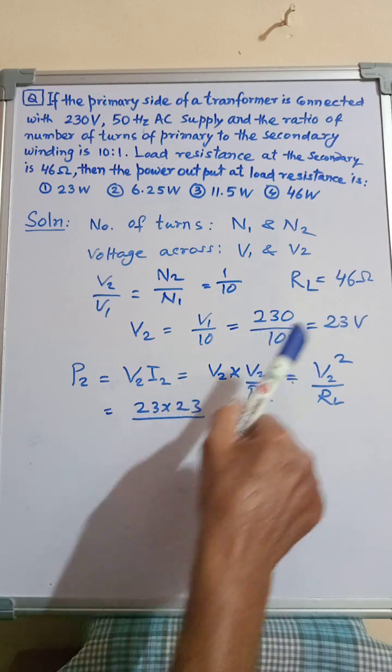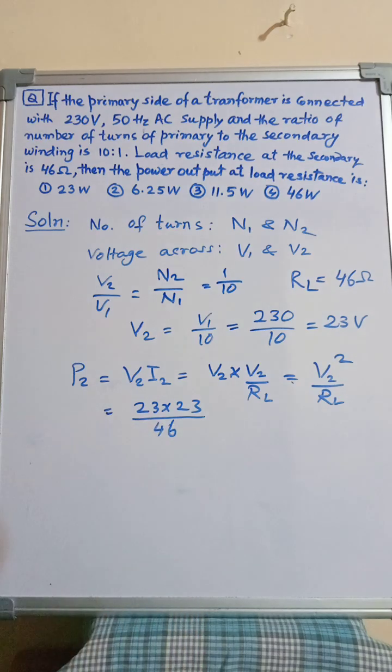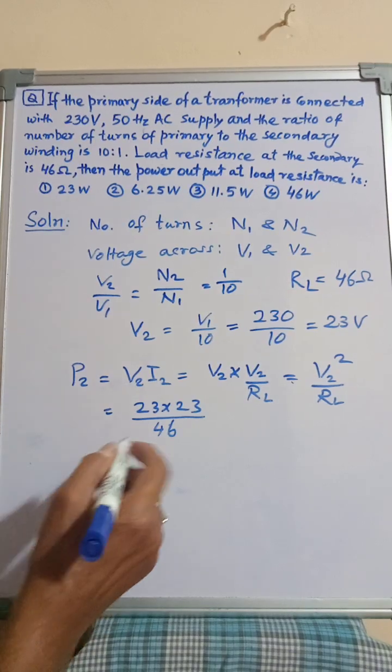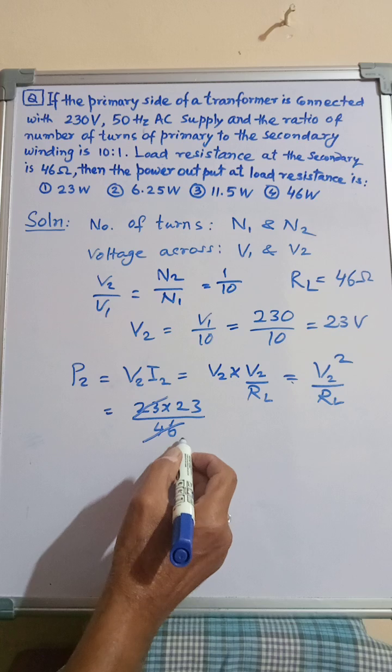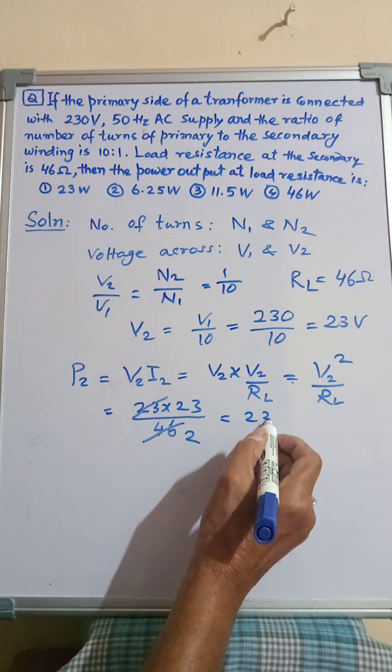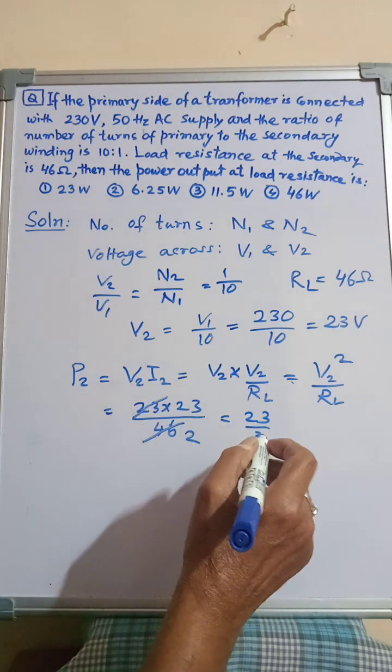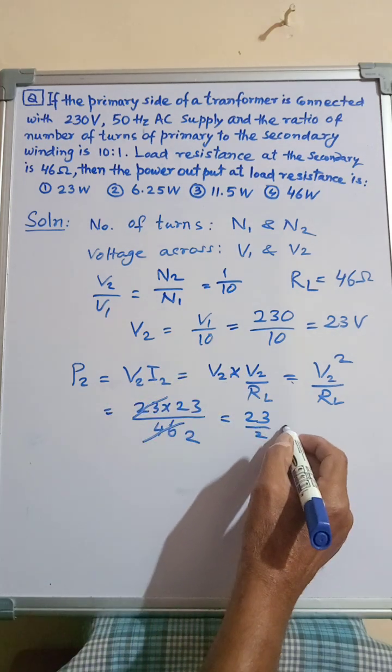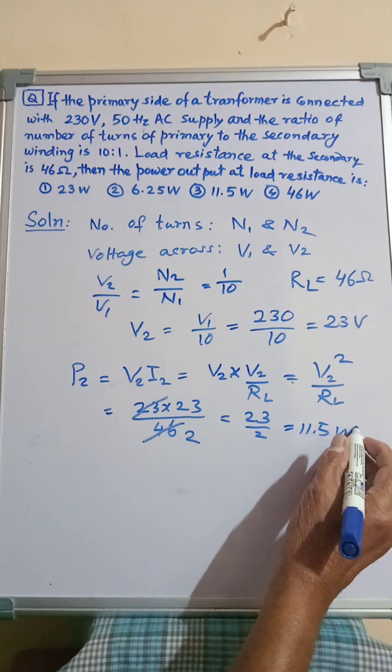Putting the value of V2, that is equal to 23 into 23 divided by RL is 46. Now we can cancel 23 with 46, that is 2, which is equal to 23 by 2 which is the power output which is equal to 11.5 watts.